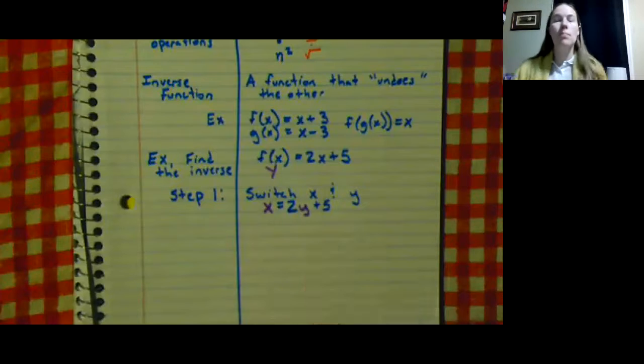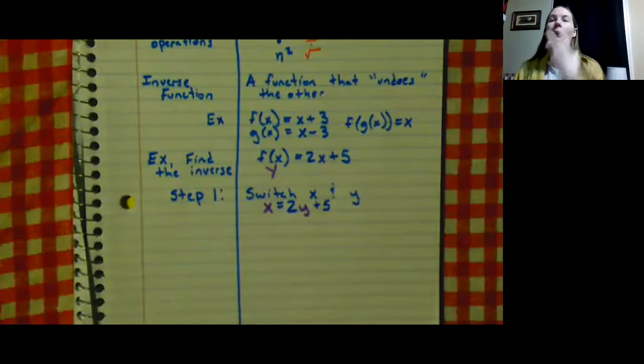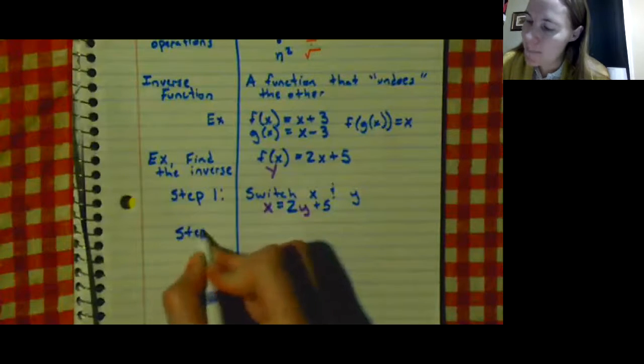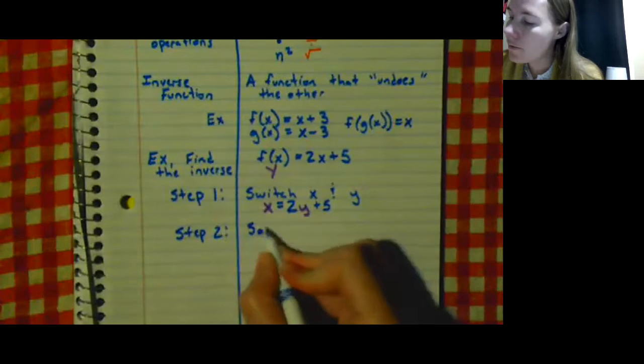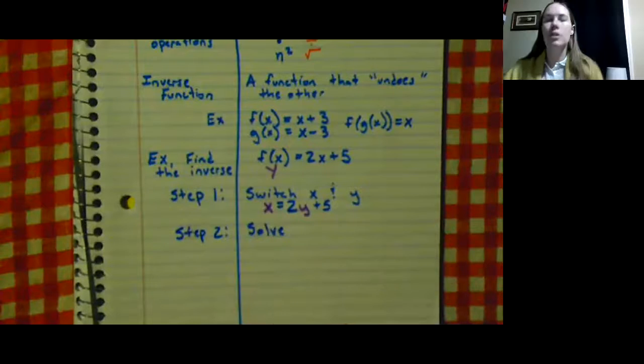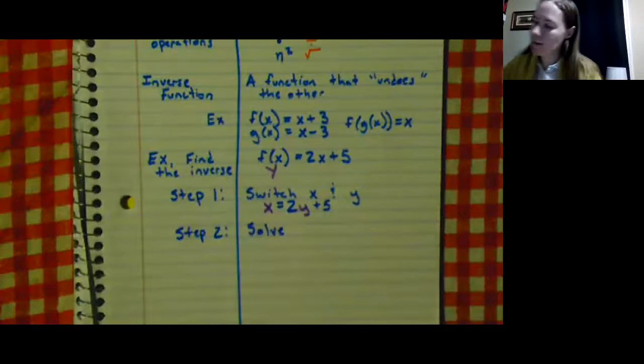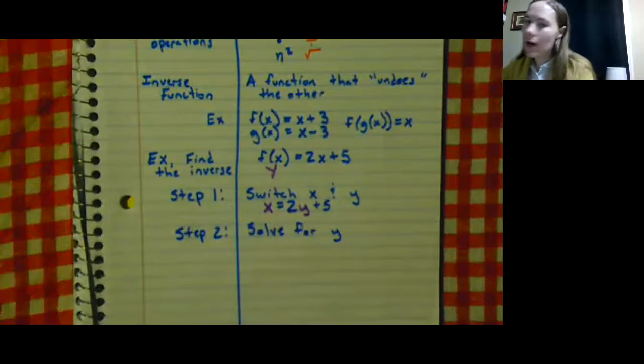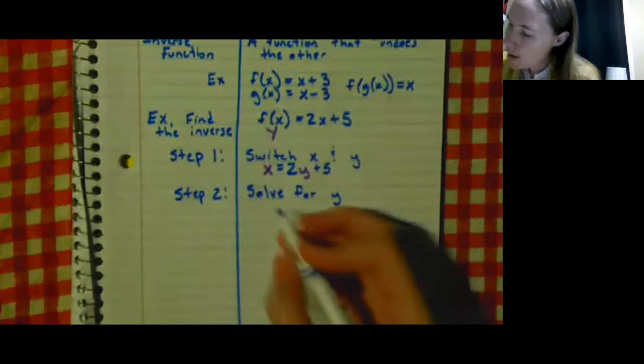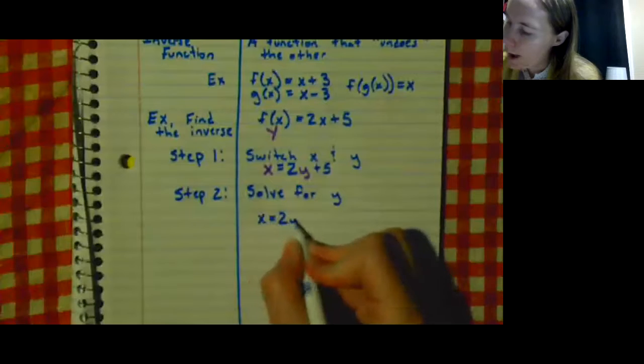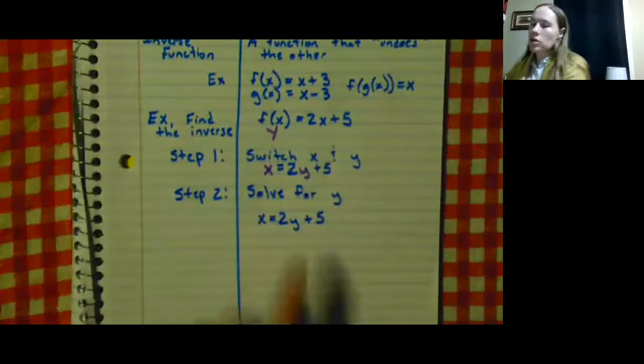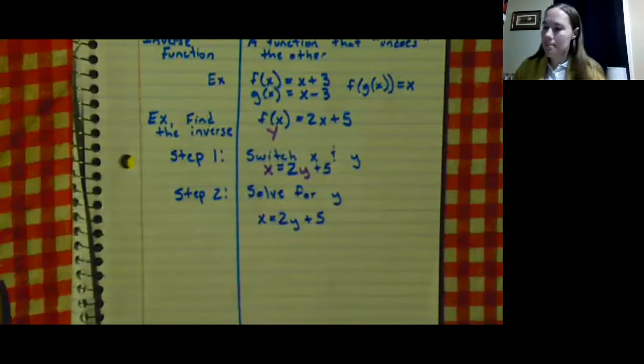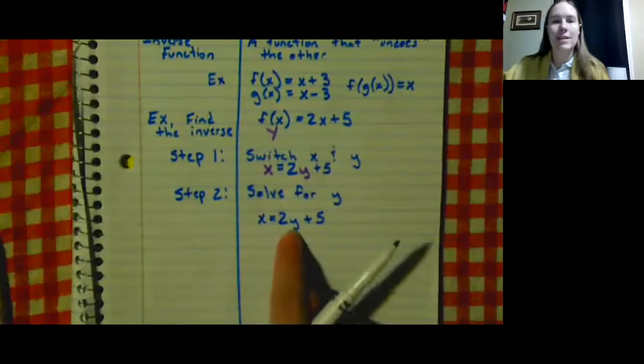So this is the most important step. And the next step is stuff you already know how to do. So step two: you're going to solve. And normally you're used to solving for x, but it's already solved for x, so you're gonna solve for y. So looking at my equation, I have x = 2y + 5, so I want to get this y alone.